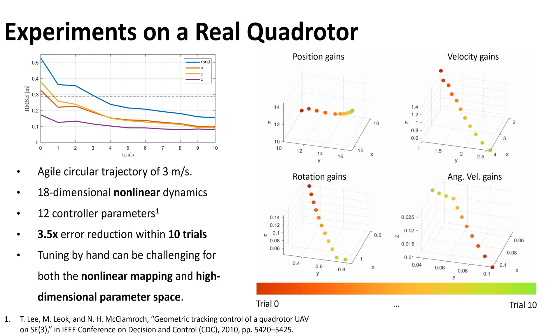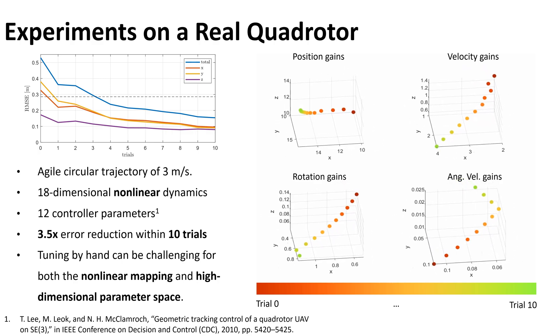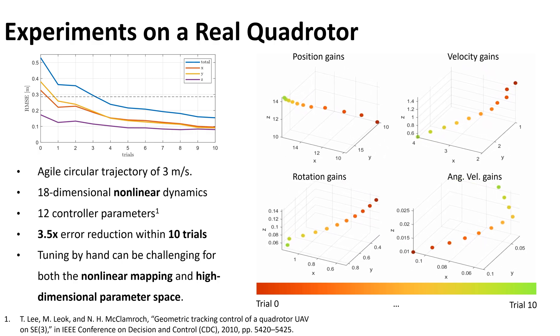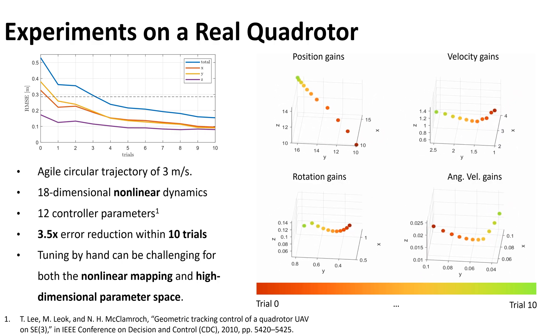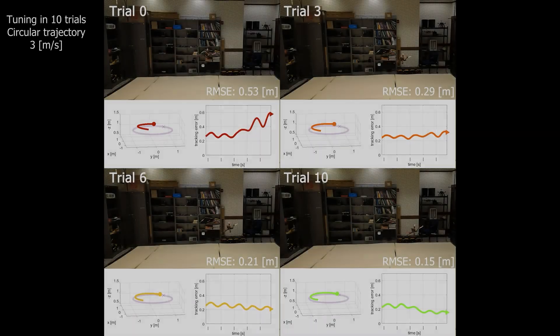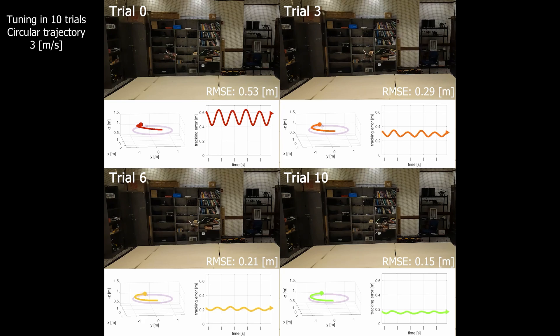This nonlinear phenomenon requires many trials by a human to perceive in order to perform manual tuning, significantly reducing efficiency. Here we show four representative trials by DiffTune, in which the performance improvement is clear towards the last trial.